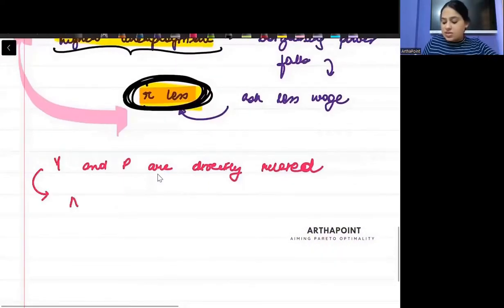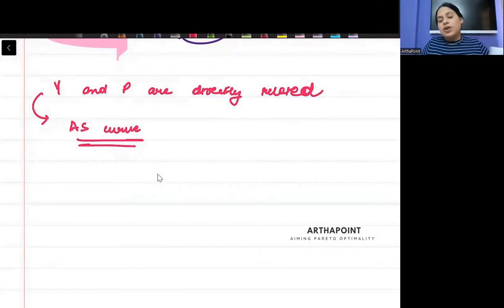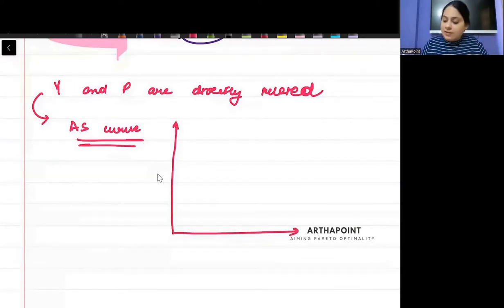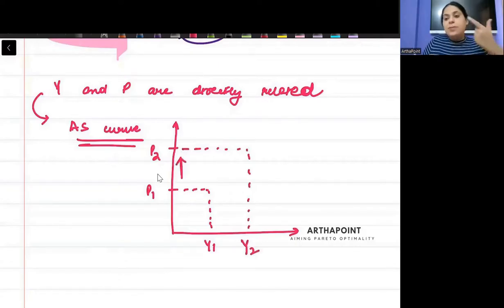Y and P are directly related. This is nothing but the AS curve. The AS curve gives me relationship between the output and the price. At what level of price I want to supply what level of output. Just see here. If I take level of price as P1, then my output level is Y1. If I take level of price as P2, then my output level is Y2.